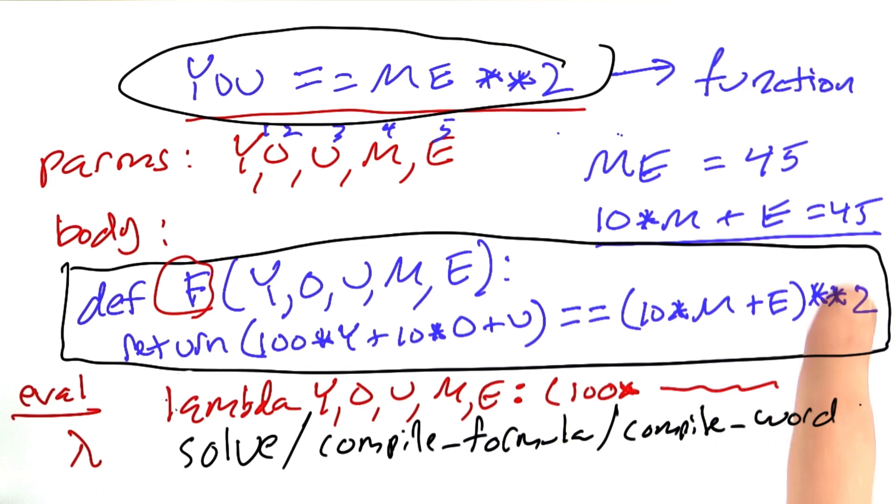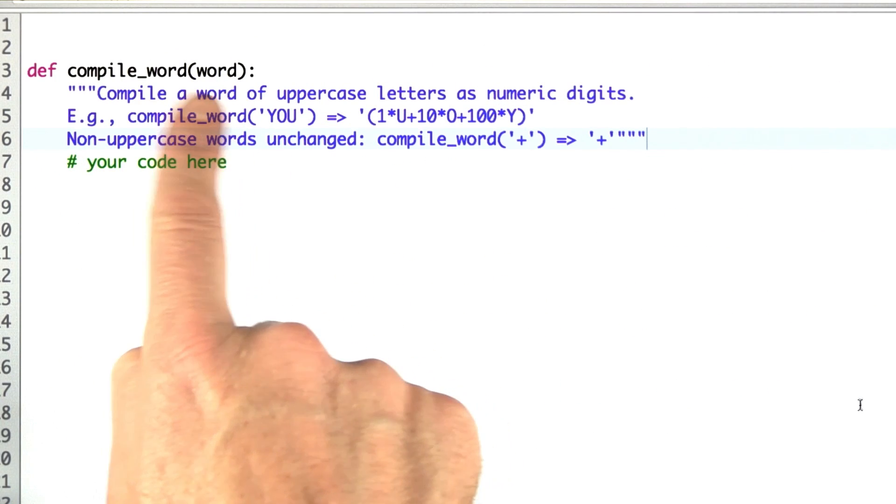It will also take a word like equals and compile that into itself, into equals, and a word like 2 and compile that into 2 itself. This is the function I want you to write.